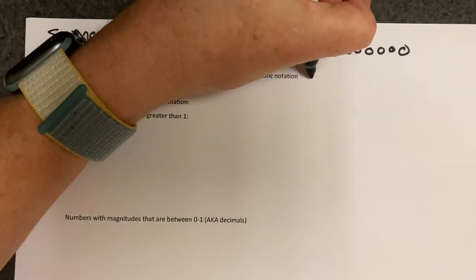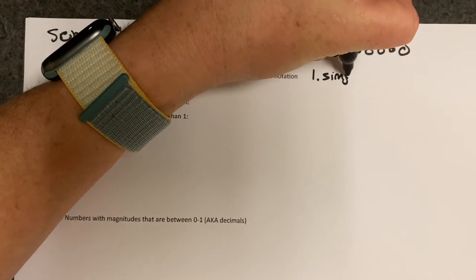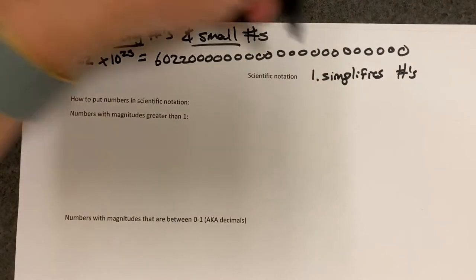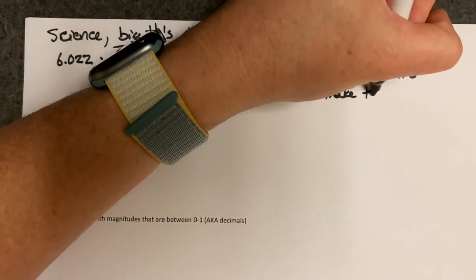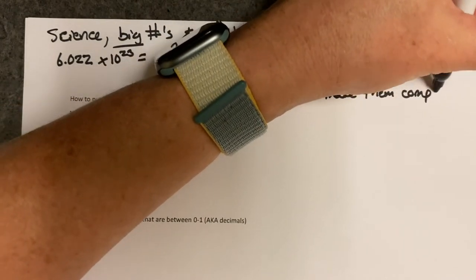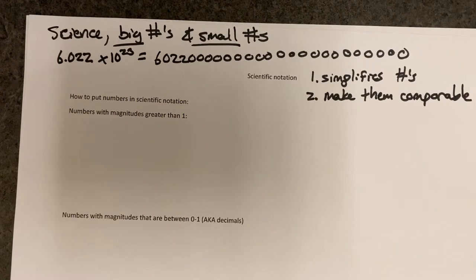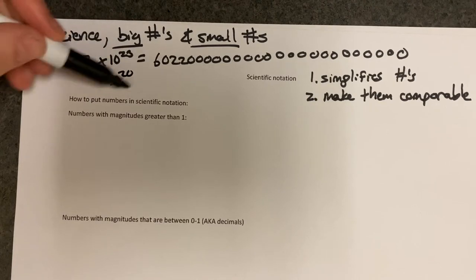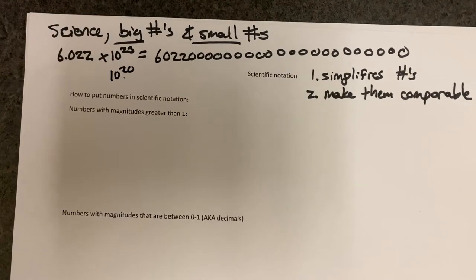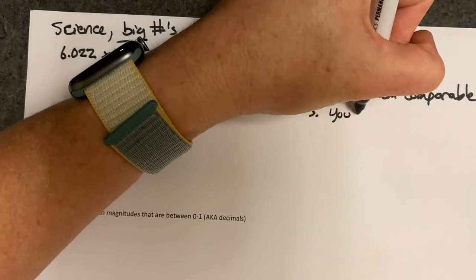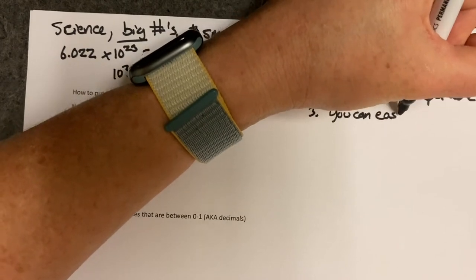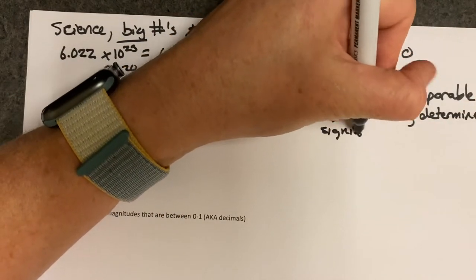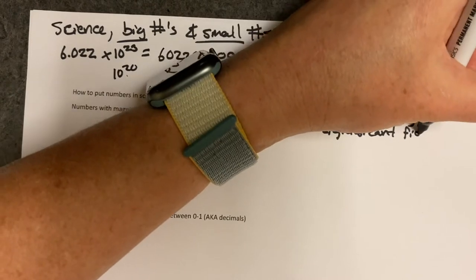Scientific notation does a couple of things. First, it simplifies numbers. Second, it makes them comparable — you can look at them and see, hey, if this one's times 10 to the 23rd and this one's times 10 to the 20, this is 10 to the 3rd times bigger than that one. Another thing is you can easily determine significant figures from scientific notation. We'll talk about significant figures in this lecture as well.